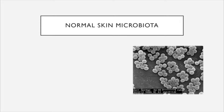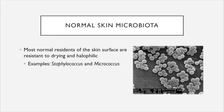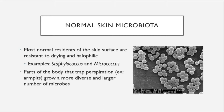Your skin also has a robust population of normal microbial residents, or your normal skin microbiota, which are in general resistant to the physical factors that inhibit other microbes from residing on the skin, including drying and high salt content. Staphylococcus and Micrococcus are two genera that have these special qualities. Parts of the body that trap perspiration, such as your armpits, tend to grow a more diverse and larger number of microbes because greater water availability means less limitation on which species can grow.